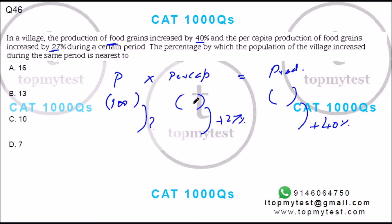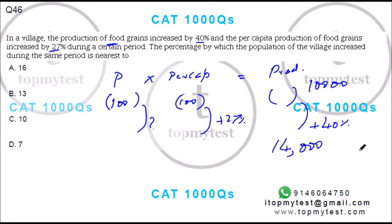Let's start with 100 people with 100 per capita production, so total value will be 10,000. 10,000 increased by 40% will become 14,000. And 100 increased by 27% will become 127. We need to find the new population value.